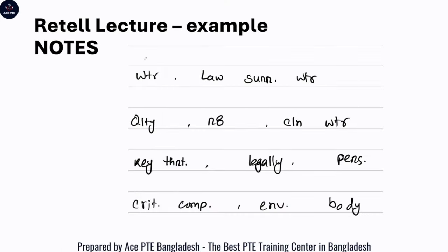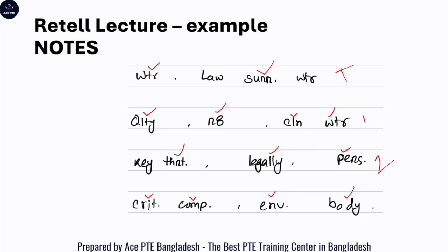These are the notes that I took. I am using short forms: WTR means water, SURR means surrounding, QLTY means quality, R8 means right, CLN means clean, again WTR water, THRT I actually meant THREAT, legally — my short form option at that time — so I wrote in full, PERS means personally, same way CRIT means critical, COMP means component, environment, and body. So as we can now see, I have a note here with a title, keyword group 1, keyword group 2, and keyword group 3. Keeping them in mind, let's now see what can be my answer.